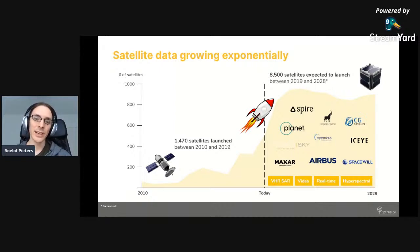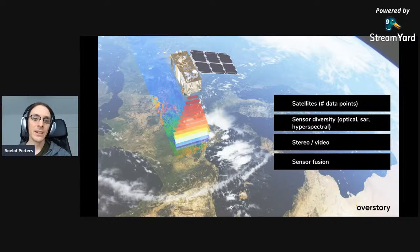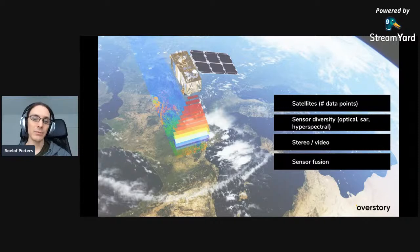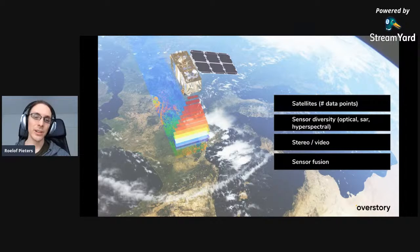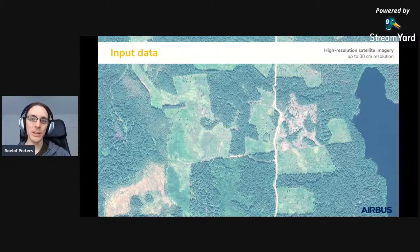New satellites are being launched at different resolutions and are becoming more accessible for small startups rather than only military. It's now possible to acquire satellite data from almost any place on earth at multiple resolutions. There's different sensor diversity, different types of satellites, stereo imaging for height mapping, and even satellites that capture video. Input data goes all the way up to 30 centimeter resolution where you can detect individual trees.